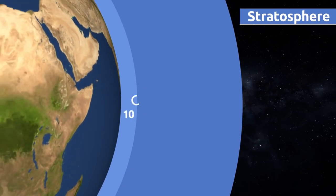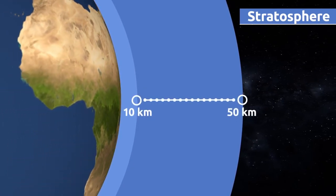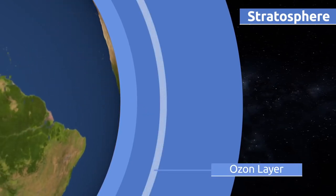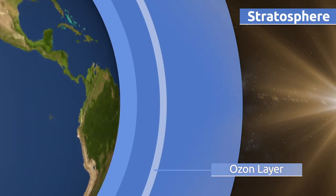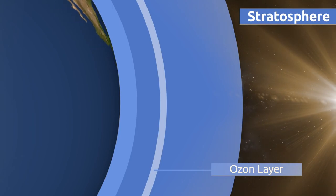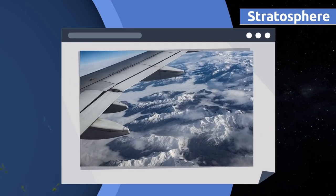The stratosphere extends to an altitude of 10 to 50 kilometers above sea level. The ozone layer is part of the stratosphere, and it's very important because it protects our planet from harmful UV sunlight rays. The ozone layer is getting thinner and thinner as air pollution rises. Do you know that airplanes fly in the stratosphere to avoid turbulence?